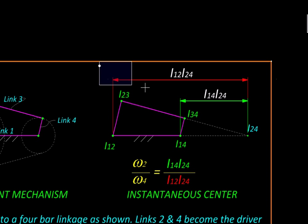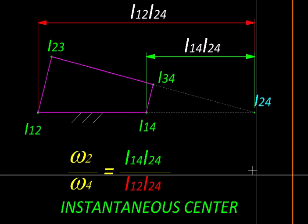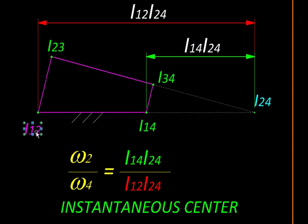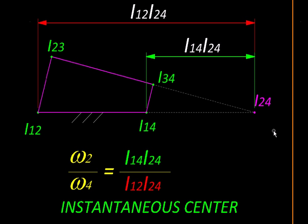The pins themselves are the instantaneous centers 1,2 and 2,3 and 3,4 and 1,4. Using Kennedy's theorem, if we connect centers 1,2 and 3,4 and extend that line, and then connect centers 1,4 and 2,3 and extend that line, the two intersect at instantaneous center 2,4.